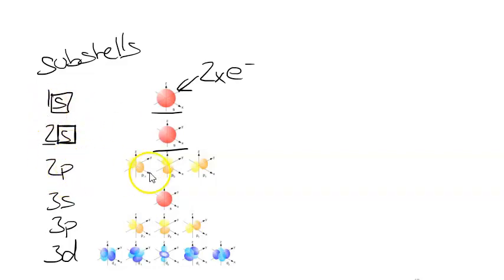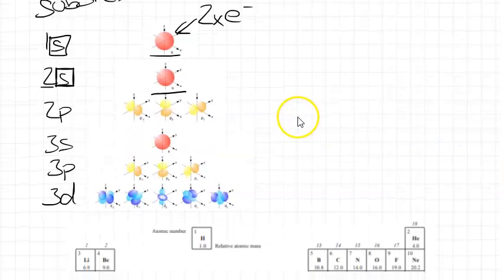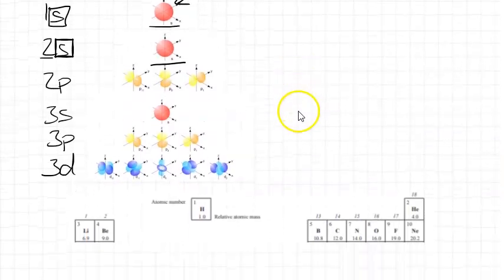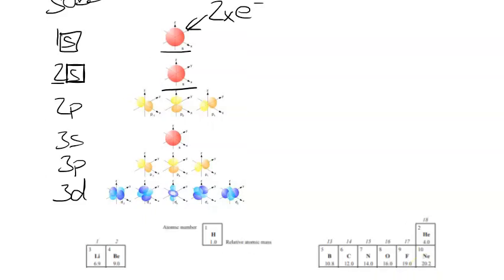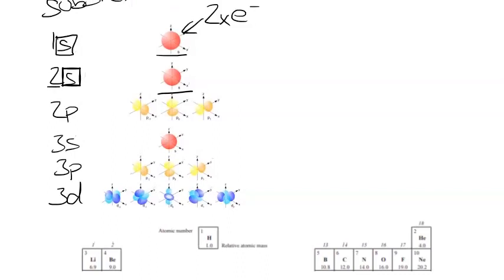Every p subshell will contain 3 orbitals, which contain 2 electrons each. So that means there's 6 electrons total that can go into a p subshell. So let's draw the electron configuration showing electron spin going through from hydrogen to neon. I think it's best for me to just show you as I'm doing this first, and then I'll explain the rules in a bit.